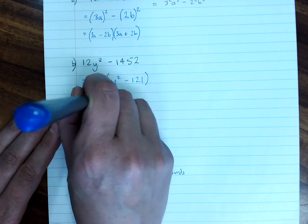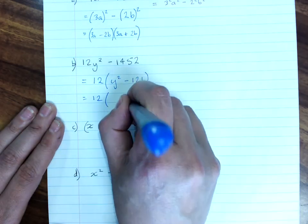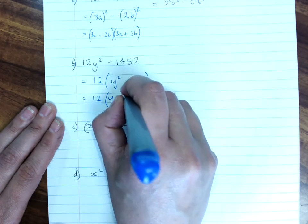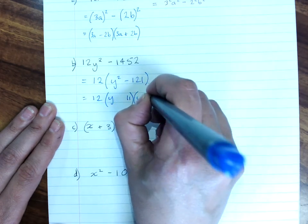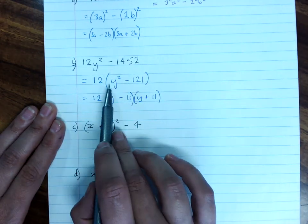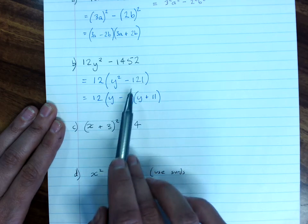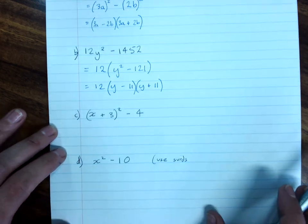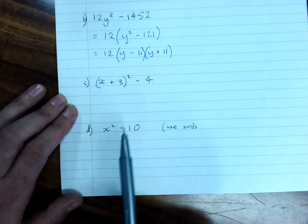So, you keep your 12 out the front, and then factorize your difference of perfect squares. Square root of the first one, square root of the second one, plus and minus.